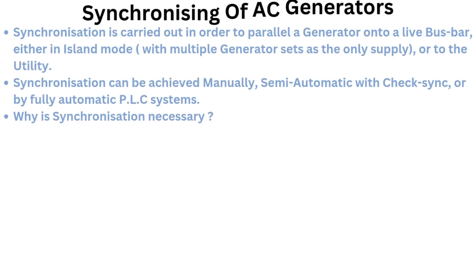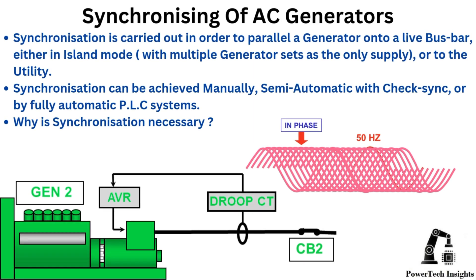Synchronizing of AC generators. Synchronization is carried out in order to parallel a generator onto a live bus bar, either in island mode with multiple generator sets as the only supply, or to the utility. Synchronization can be achieved manually, semi-automatic with check-sync, or by fully automatic PLC systems.